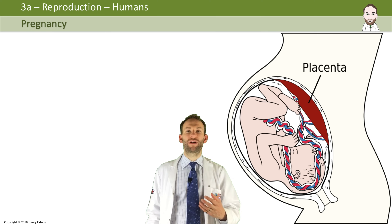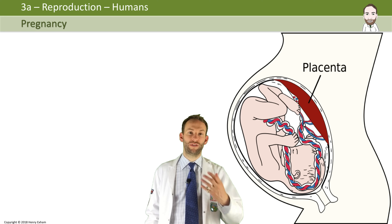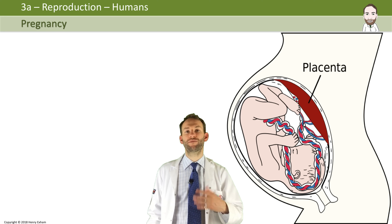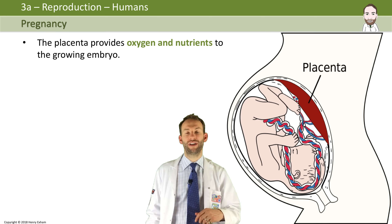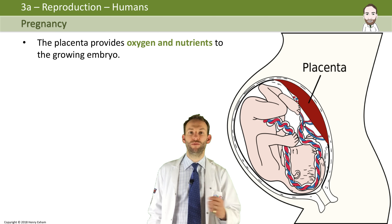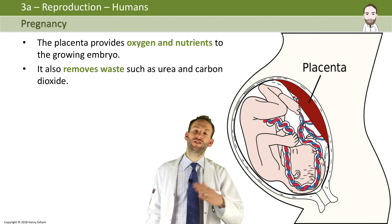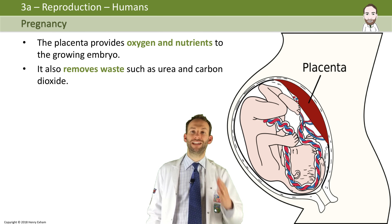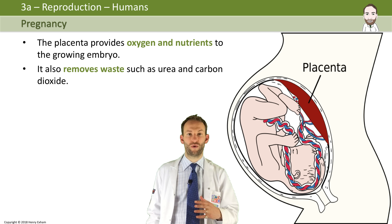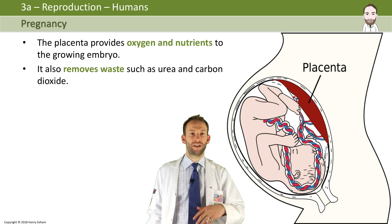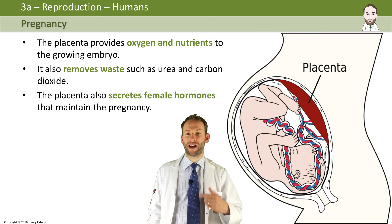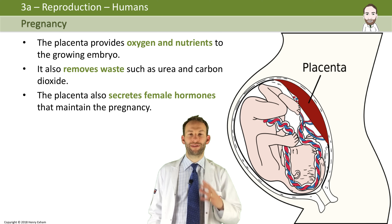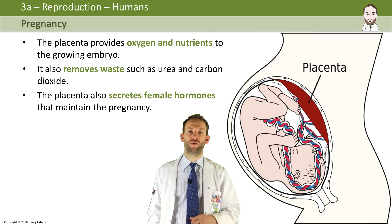Once an embryo is implanted, the placenta will develop. The placenta provides oxygen and nutrients to the growing embryo, and it also removes all the waste. It's connected to the fetus via the umbilical cord. The placenta also secretes some really important female hormones that keep the pregnancy going, so it has some really important roles.